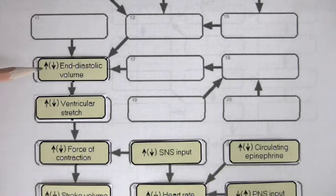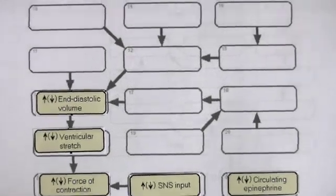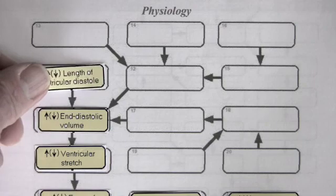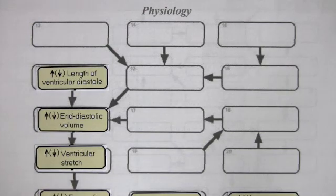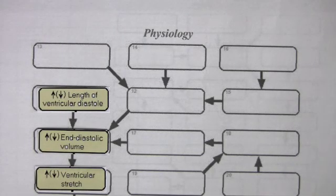What causes an increase in end diastolic volume? One obvious cause would be an increase in the length of diastole. After all, the longer the heart rests, the more blood is able to flow into the heart. That would increase end diastolic volume.